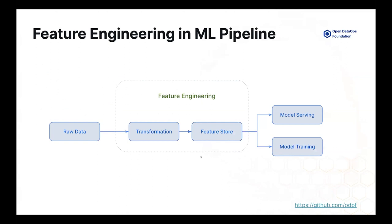So where does feature engineering fit in the overall ML pipeline? You have your raw data, you pull it, you want to transform that data, and then store it into a feature store. The feature store is then used for model serving and model training. That's the very high level, simplistic view of how it looks.